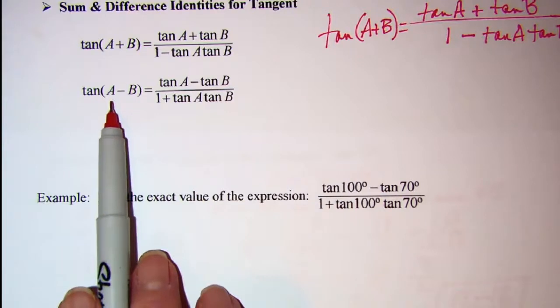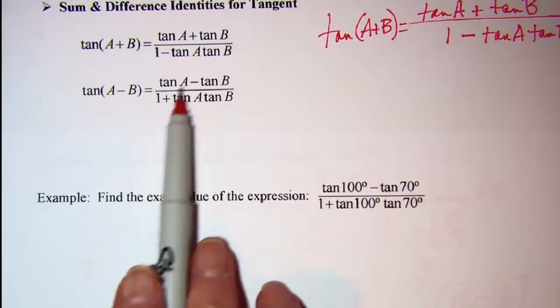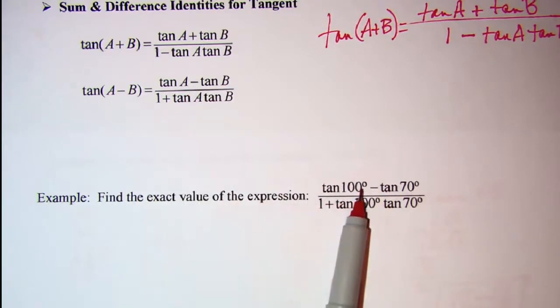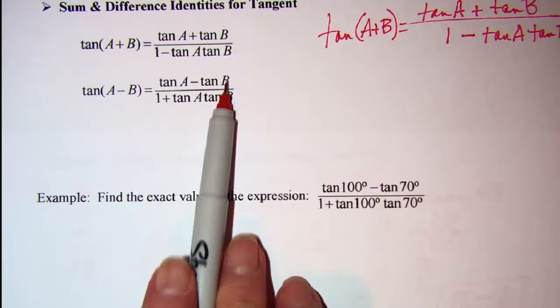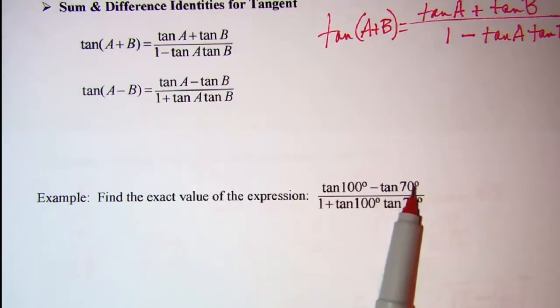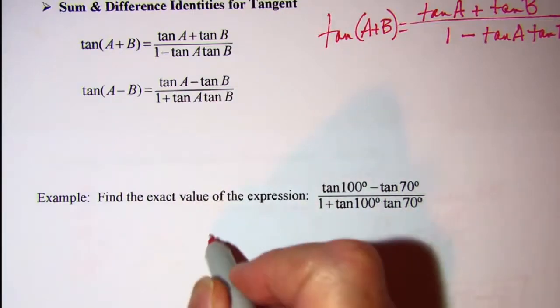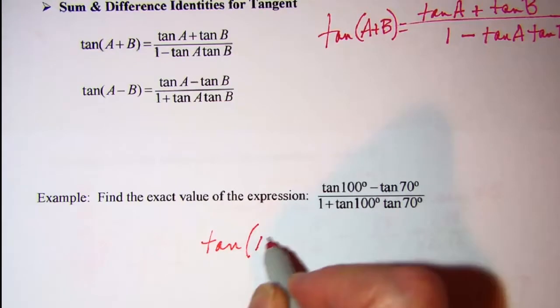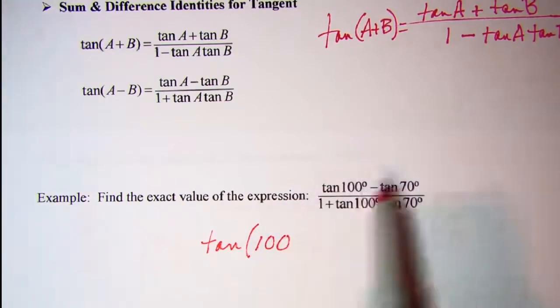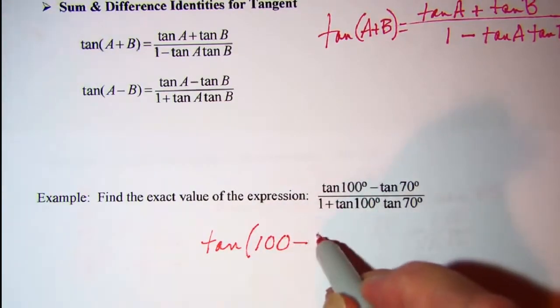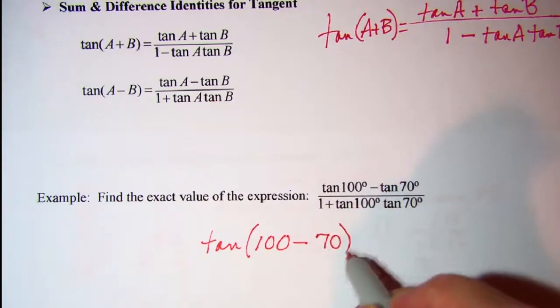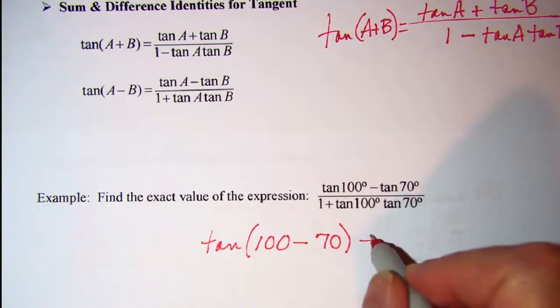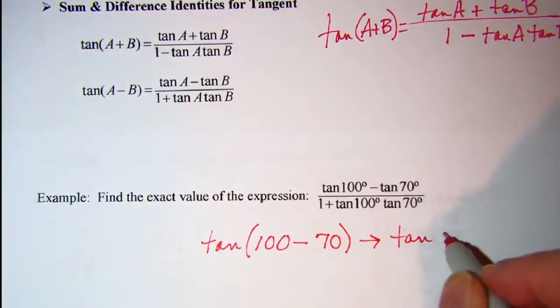So I need for the A I'm going to use 100, and for the B I'm going to use 70. So I have tangent of 100 and it's going to be minus 70. Well this is just tangent of 30 degrees.